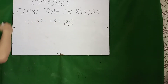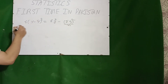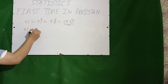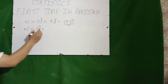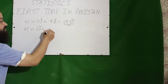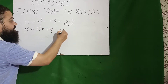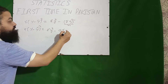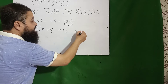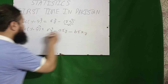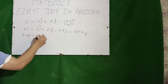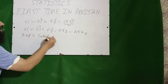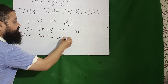For unexplained variation, Σ(y − ŷ)² is equal to Σy² − aΣy − bΣxy. And then total explained variation will be equal to total minus unexplained variation.